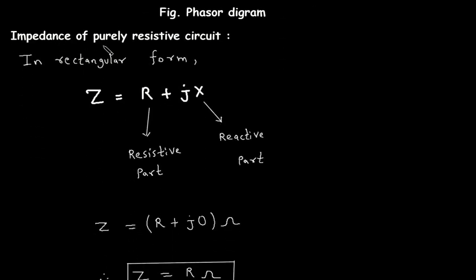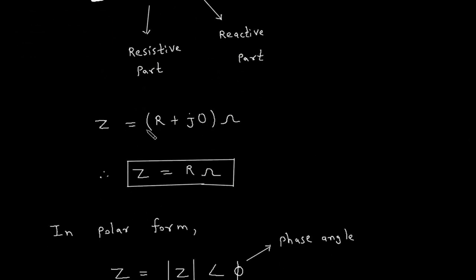Now, impedance of a purely resistive circuit. In rectangular form, Z is equal to R plus Jx, where R is the resistive part and X is the reactive part. In the case of a purely resistive circuit, the reactive part is 0 and the resistive part is resistance R. So we can substitute 0, giving Z is equal to R plus J0. Z is the impedance and the unit of impedance is ohm, so Z is equal to R plus J0 ohms. We can simply write this as impedance Z is equal to R ohms. So in a purely resistive AC circuit, the impedance is equal to the resistance.